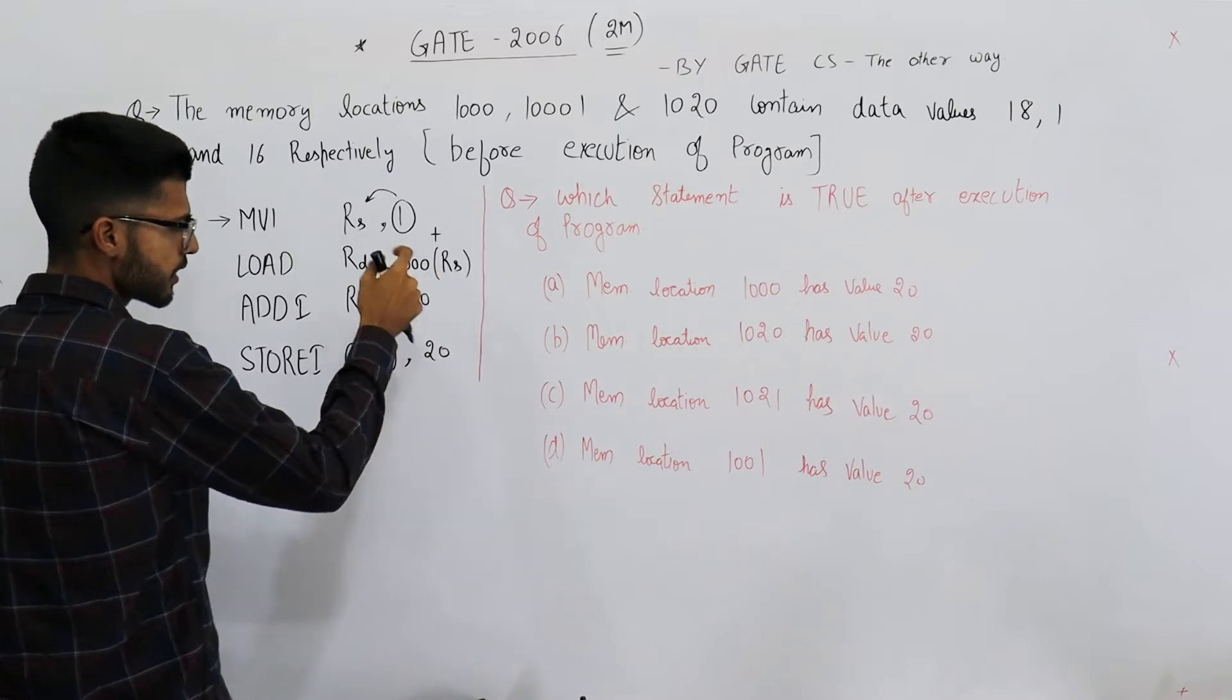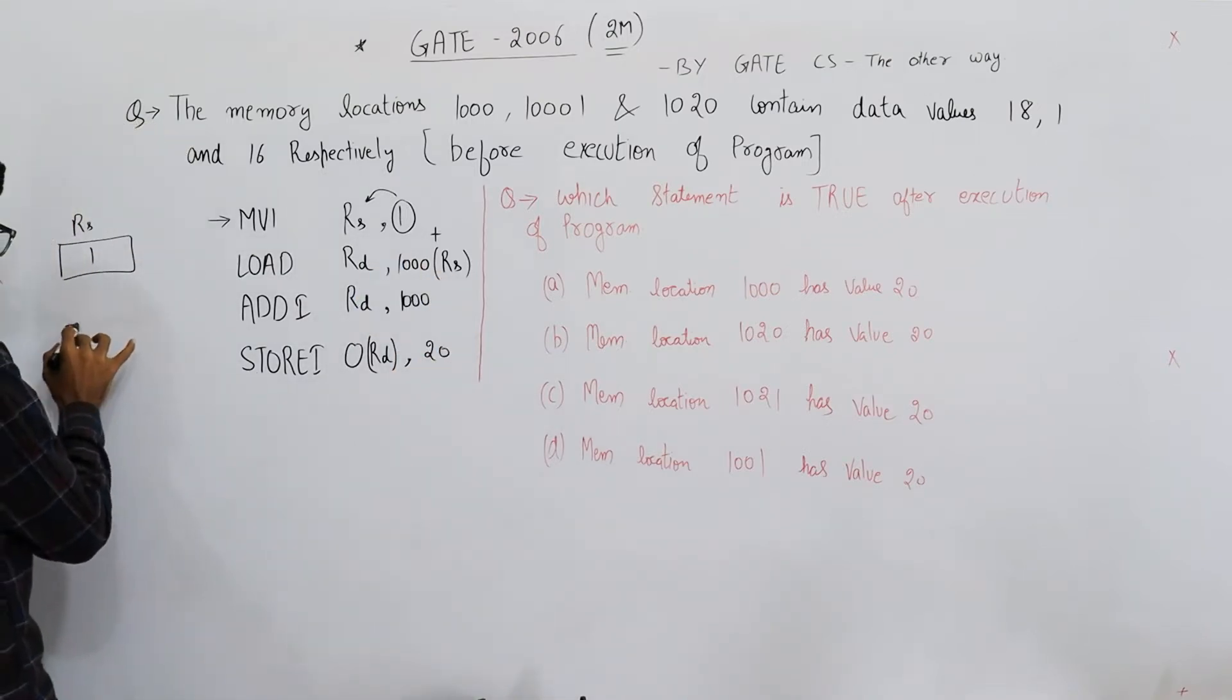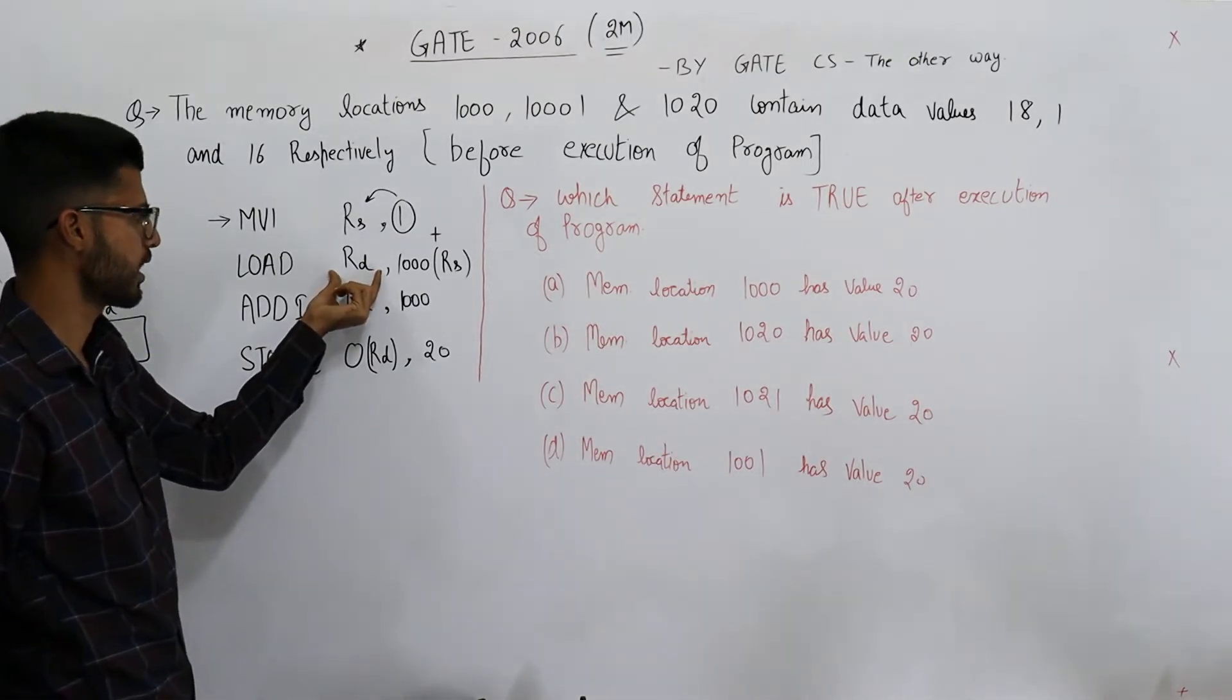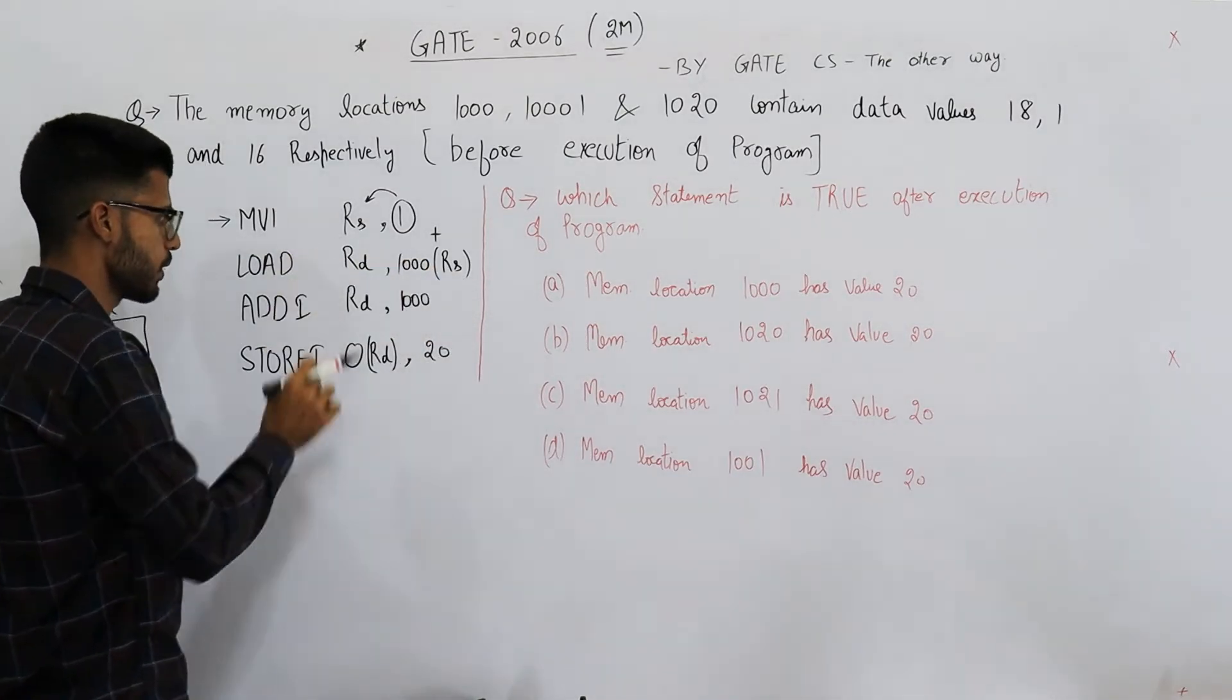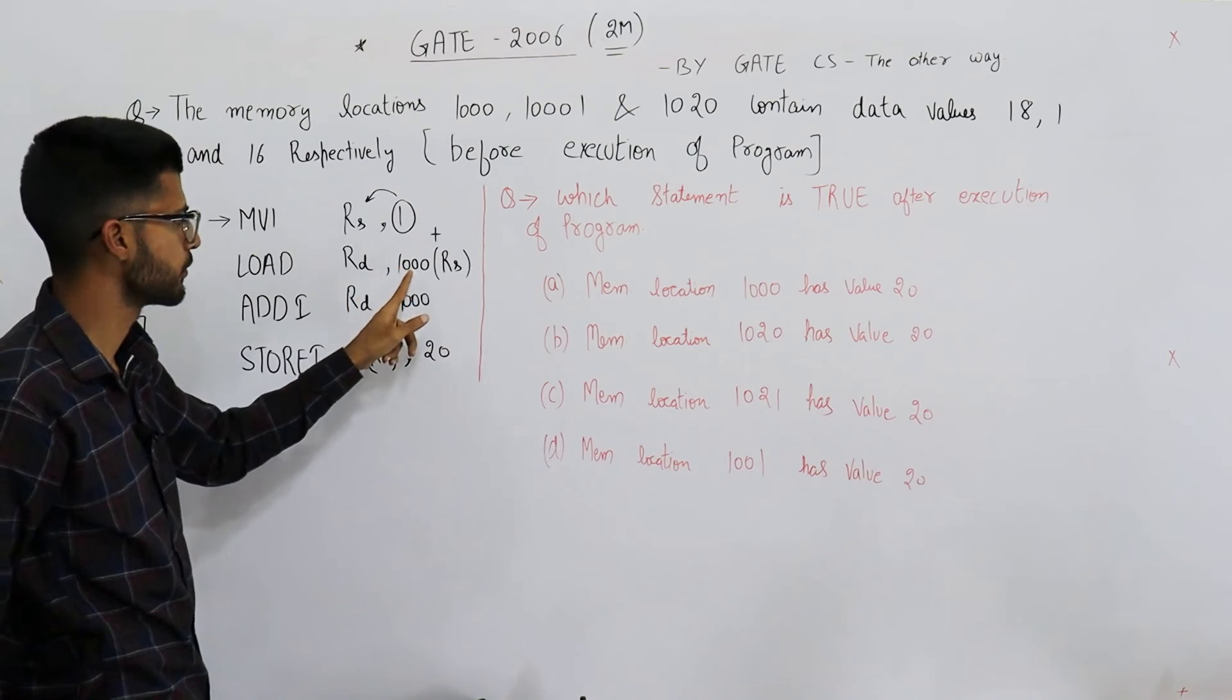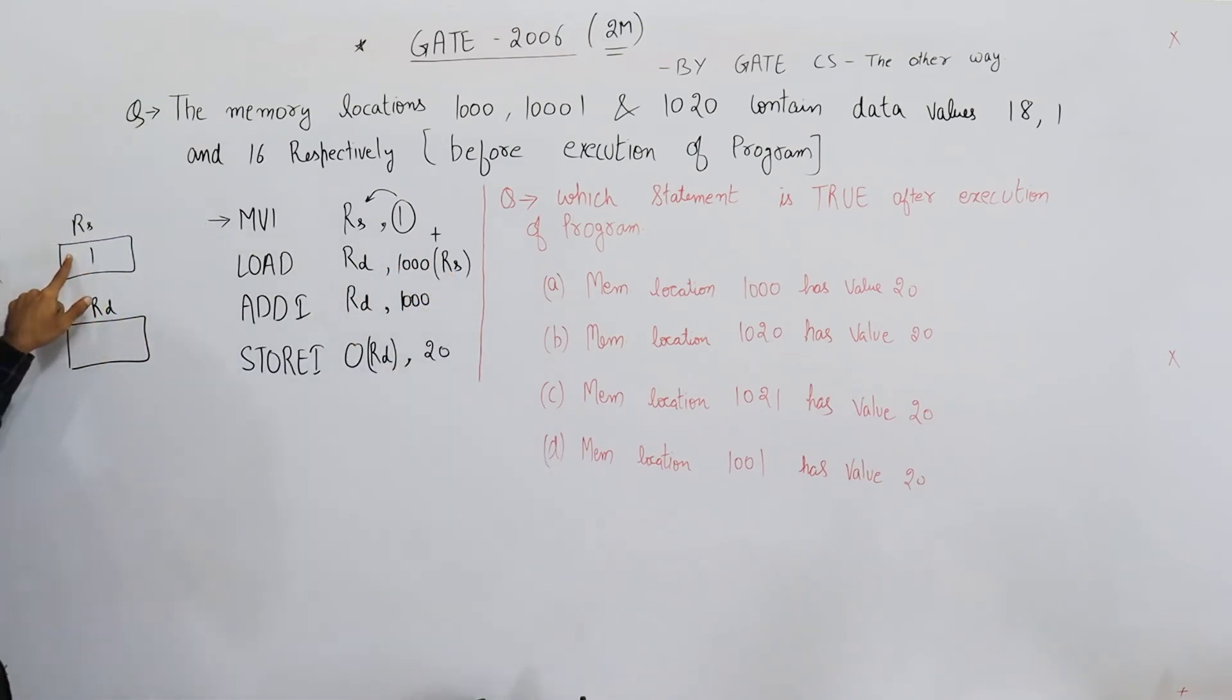What are we loading here? First of all, whatever gets loaded will come into the first operand which is Rd. That means from this location we are loading into Rd. Now what is the meaning of this? It means memory location 1000 plus the value contained in Rs.